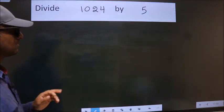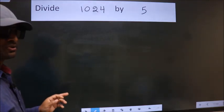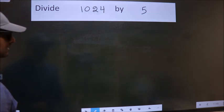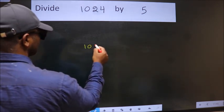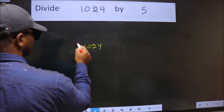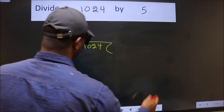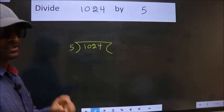Divide 1024 by 5. To do this division, we should frame it in this way. 1024 here, 5 here. This is your step 1.